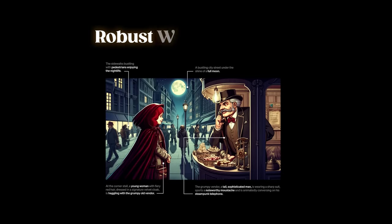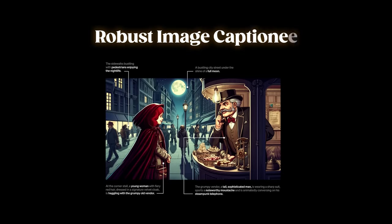At the heart of DALL-E 3's progress is a robust image captioner. It's all about the image captions — the text fed during training along with the image it should be able to generate. The new image captioner is the main factor why DALL-E 3 is so much better than DALL-E 2.